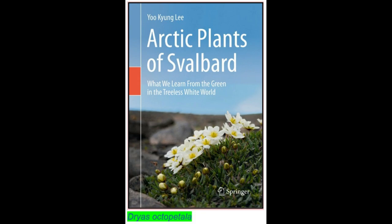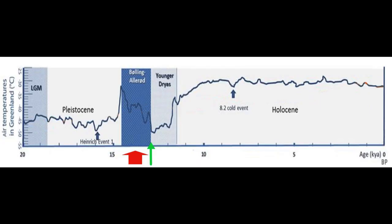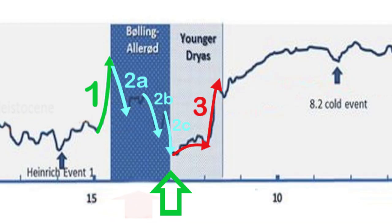What is in fact abnormal is the Holocene, which starts after the Younger Dryas — and that is more than a thousand years after the supposed meteorite impact.